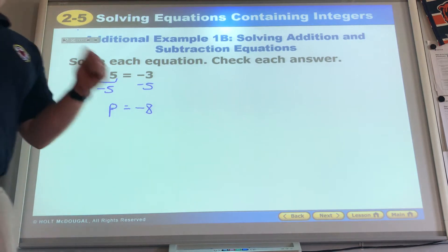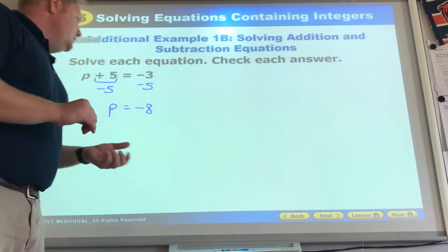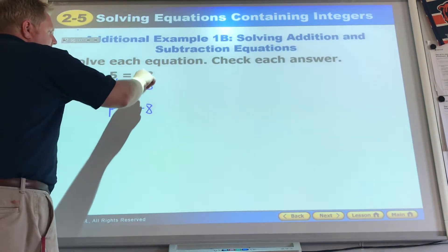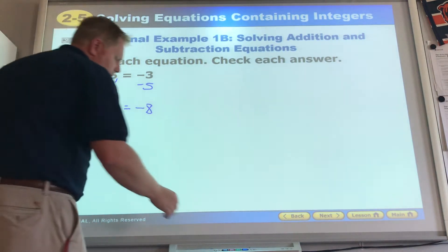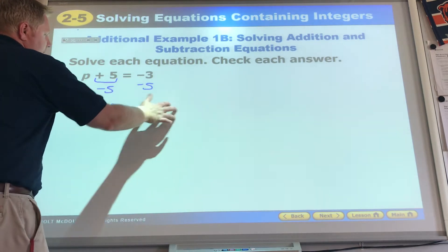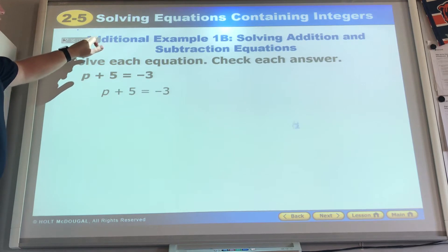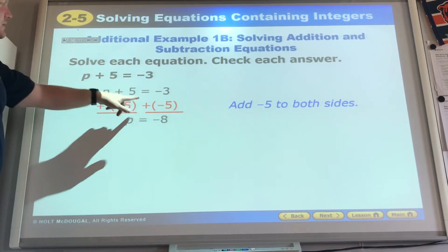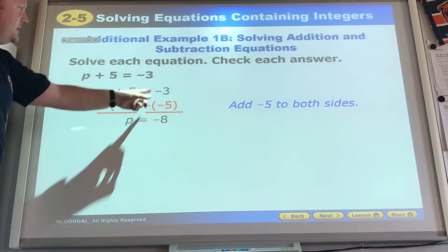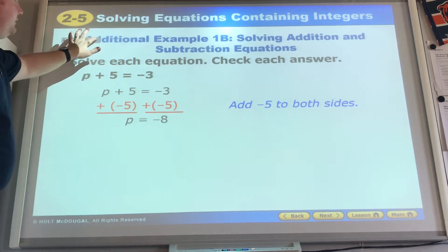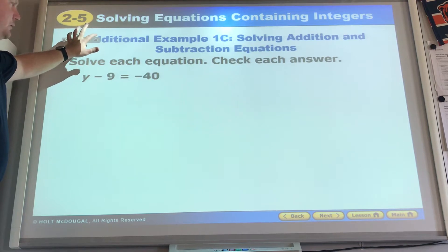P equals negative 8. Remember, you have to keep straight the addition and subtraction from the multiplication and division. Signs are the same, so we add and keep the sign. Hopefully, some of you took a picture of it before you left. They subtract 5 and subtract 5. Notice they put adding a negative 5 to help you kind of understand the idea. We get negative 8 as our answer. We put that back in. And that is true.